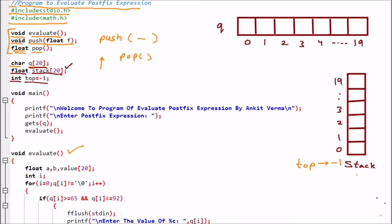Now we have the main function, void main. Inside it, printf displays 'Welcome to program of evaluate postfix expression.' Then another printf says 'Enter postfix expression.' The user enters an expression — we are assuming the expression is AB+, so A, B, and plus are taken.